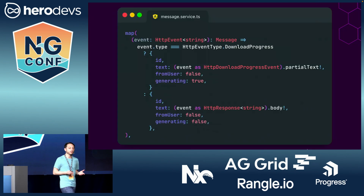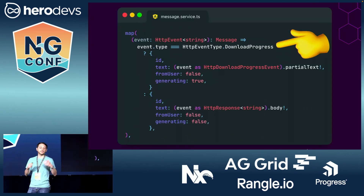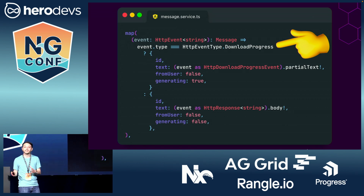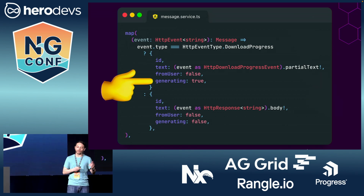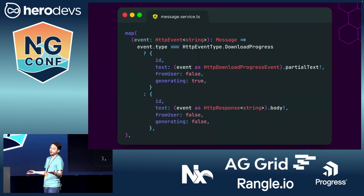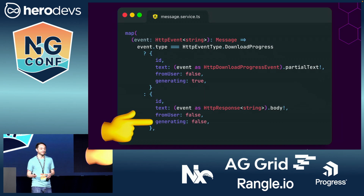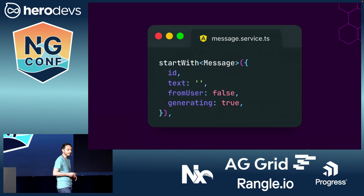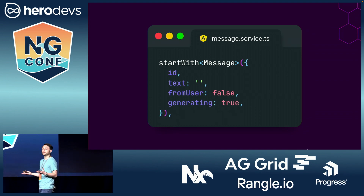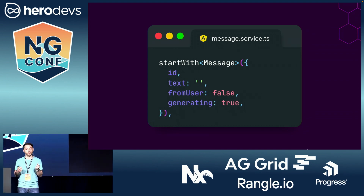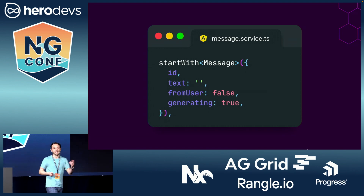Once we receive an event, we can use the RxJS map operator to transform it into a message object. If the type of event is download progress, that means the AI is still working, so we grab the partial text and set generating to true. If the type of event is response, that means the AI is done, so we grab the full response body and set generating to false. The last thing we need to do is use the RxJS startWith operator to set an empty message object as the initial value for our stream. That way, the user still sees an empty chat bubble as they're waiting for the text to roll in.